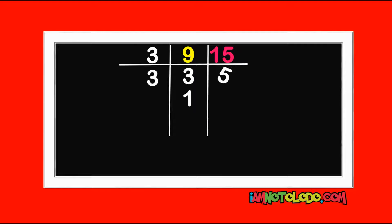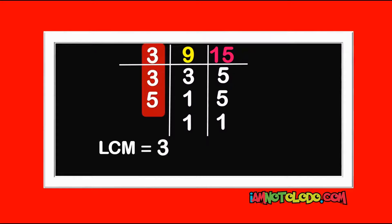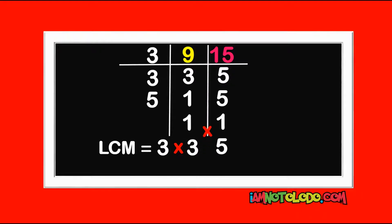3 cannot divide 5, so we write down our 5. 5 can divide 5, so we use 5. This is already 1, so write down 1. 5 in 5 is 1. So our LCM equals 3 times 3 times 5. 3 times 3 is 9, times 5 equals 45. So our LCM is 45. Do you understand?